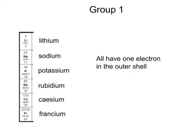All the elements in Group 1 have got one electron in their outer shell. So these elements—lithium, sodium, potassium, rubidium, caesium, and francium—are all going to react in a similar way because they all wish to lose one electron.